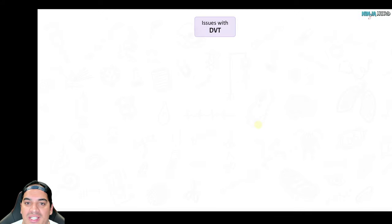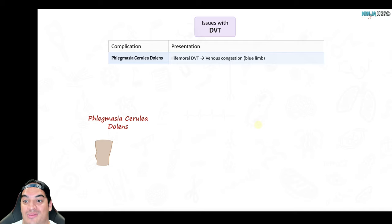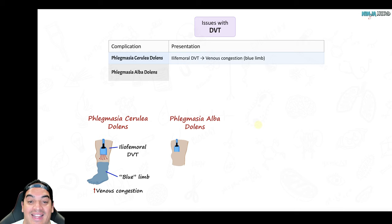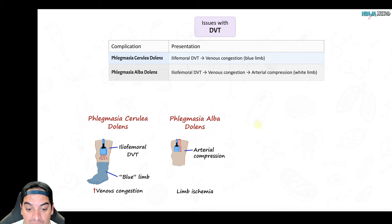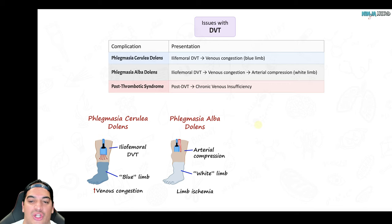Why is DVT so dangerous? With a very proximal DVT like an iliofemoral one, blood backs up making the limb super congested and bluish — we call that phlegmasia cerulea dolens. If congestion is severe enough, it compresses the nearby artery, reducing blood flow and causing a white, pale limb called phlegmasia alba dolens. After the clot dissolves, veins may develop post-thrombotic syndrome where they can't move blood properly, leading to chronic venous insufficiency.